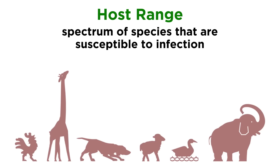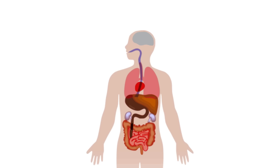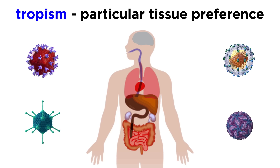For any given virus, the host range refers to the spectrum of species that are susceptible to infection with that virus. It turns out that most viruses have a pretty narrow range, and most viruses — but not all — are able to infect only one species. A disease can be caused by multiple viruses that have a common tissue preference, also called a tropism.